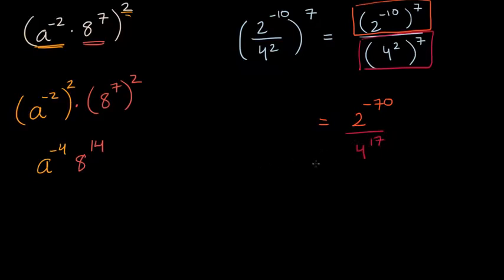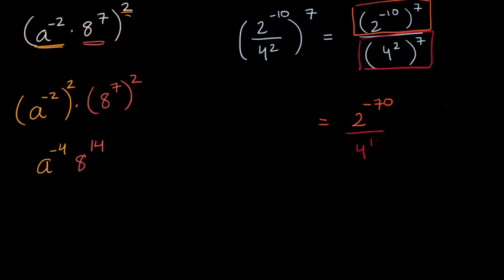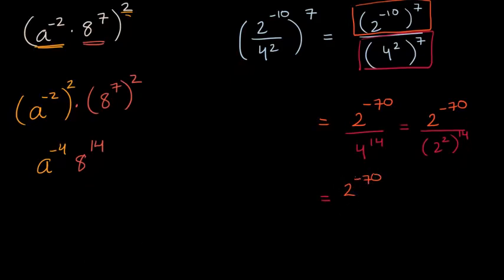Now we can think about simplifying this even further. Four is a power of two, so we can rewrite four to the fourteenth as two squared to the fourteenth power. So the expression becomes two to the negative 70th, over two squared to the fourteenth, which simplifies to two to the negative 70th over two to the twenty-eighth power.